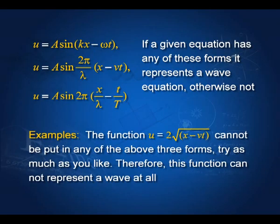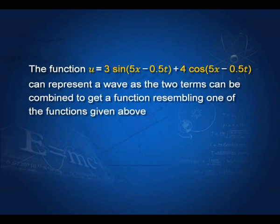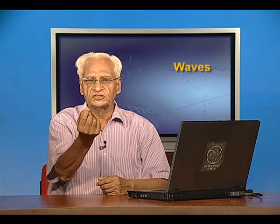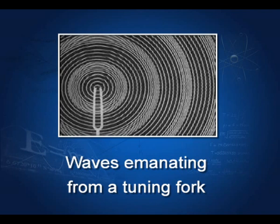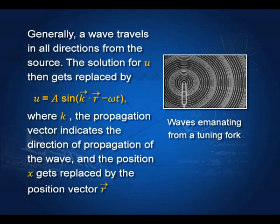A combination of sine and cosine can represent a wave because it can be put in one of these forms. A wave can travel in all directions — if a source is here, it will travel in all directions, as shown in the Wikipedia photograph. For a spherical wave from a tuning fork, k*x is replaced by the vector dot product k⃗ · r⃗, where k⃗ is the propagation vector and r⃗ is the position vector.